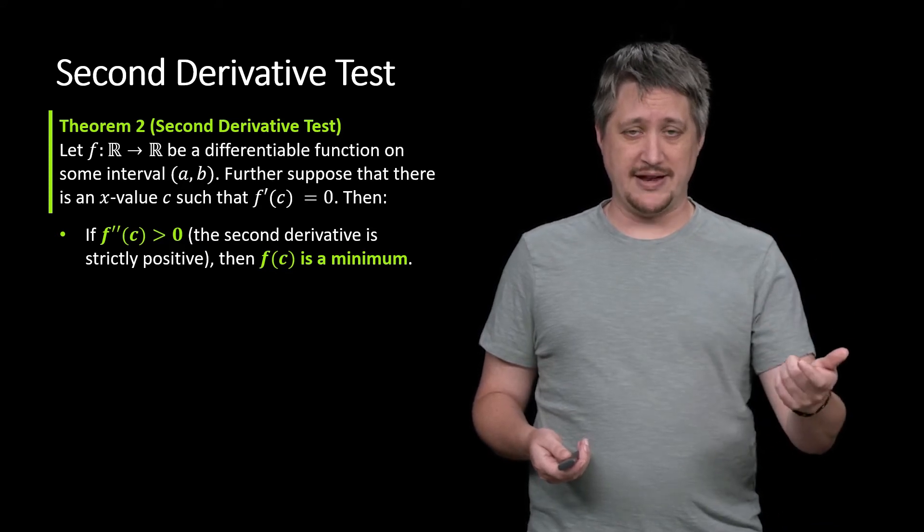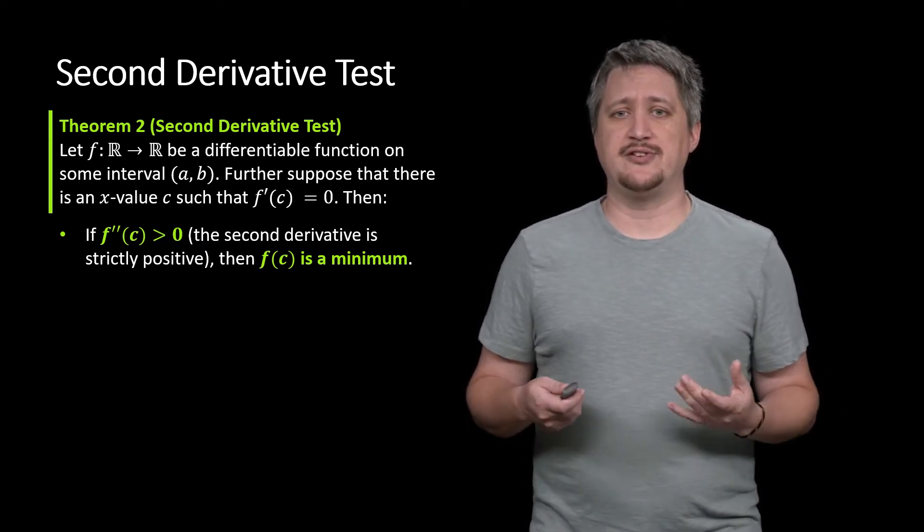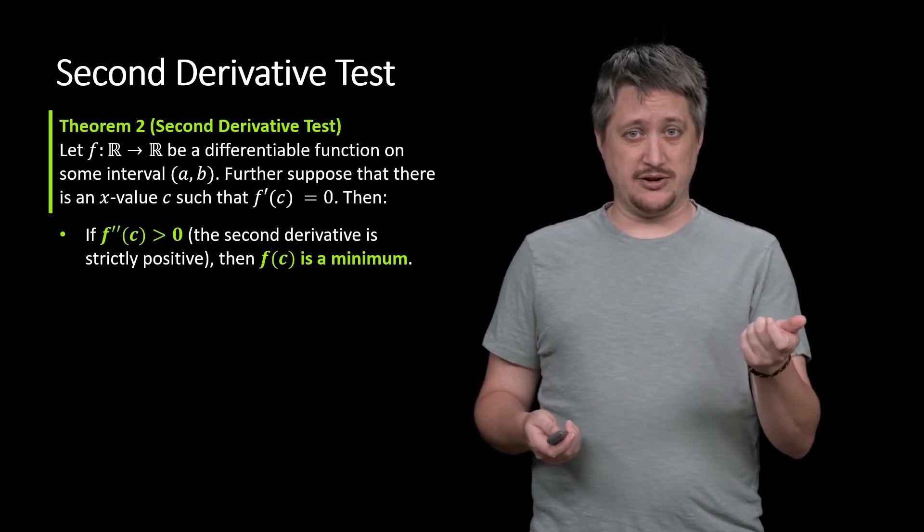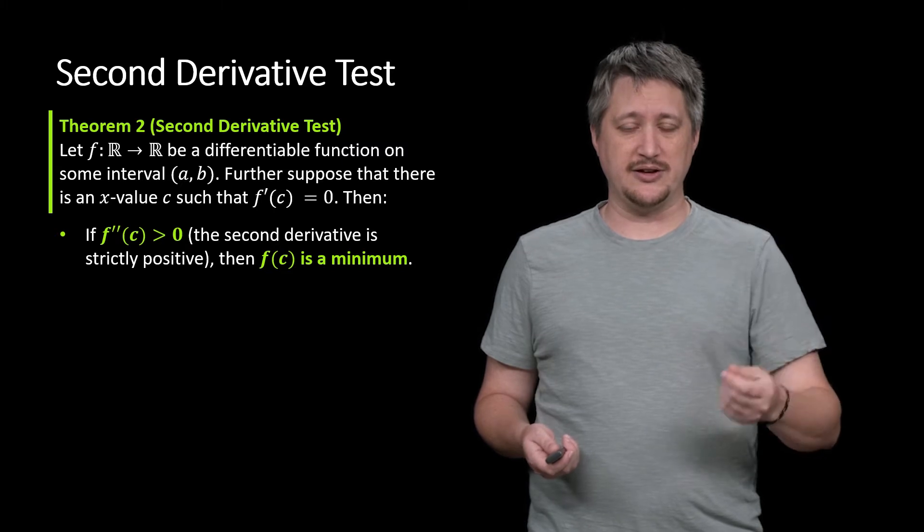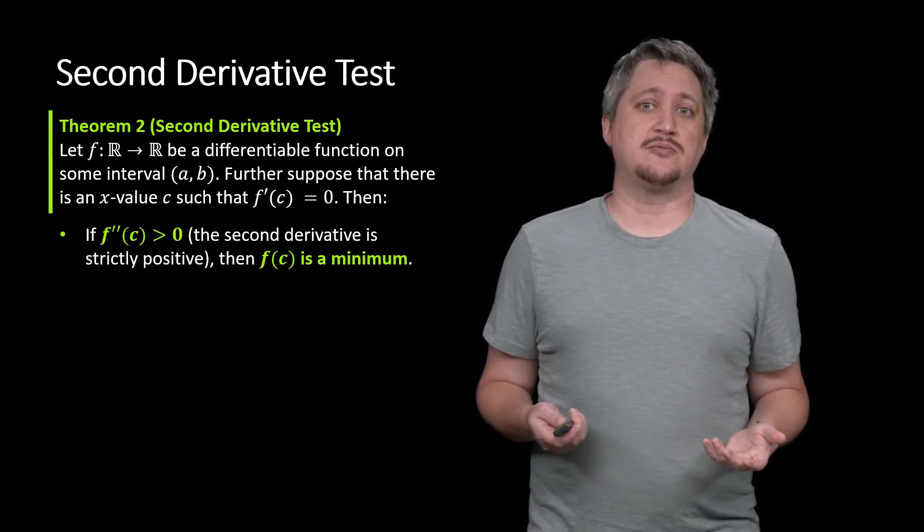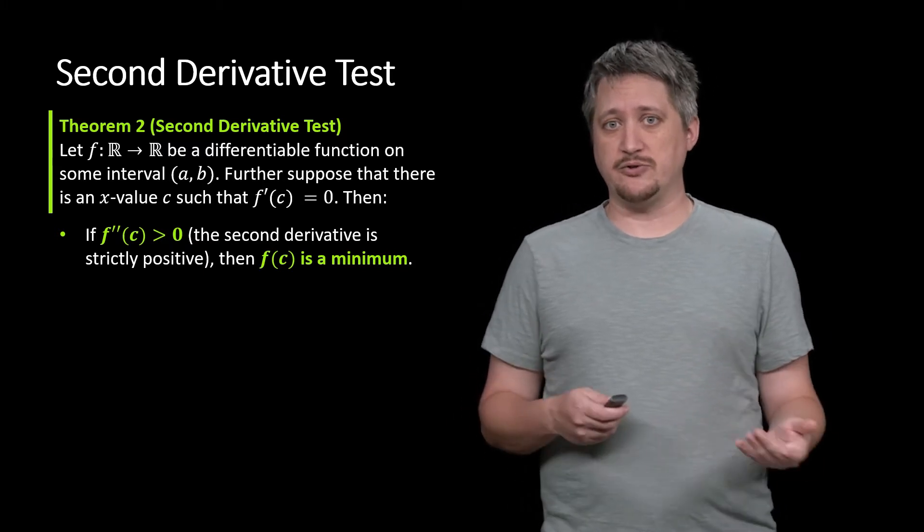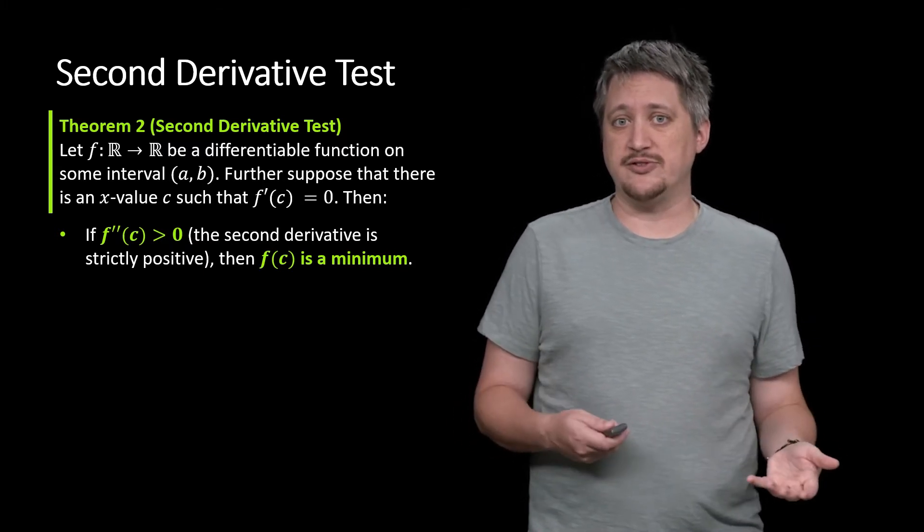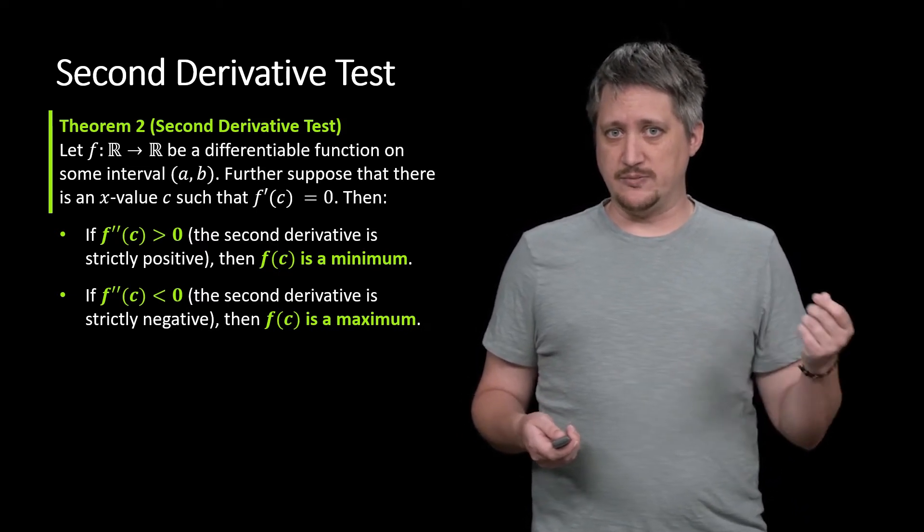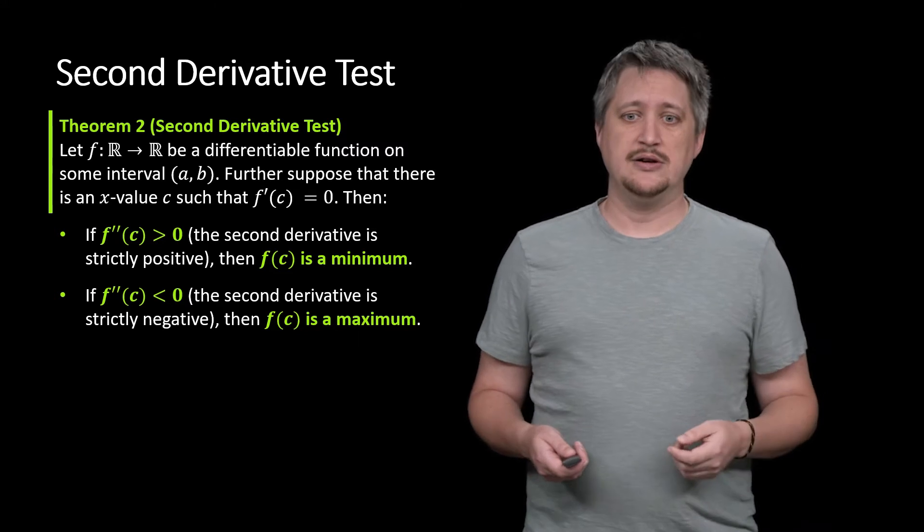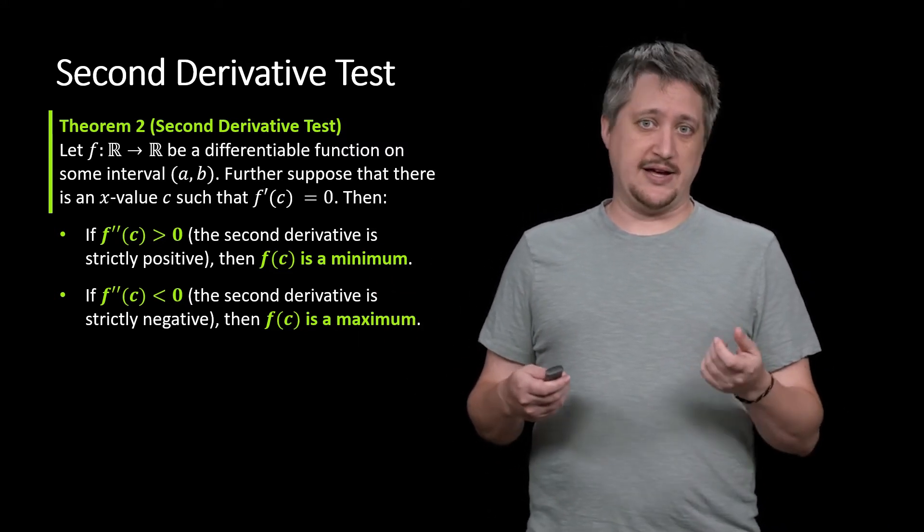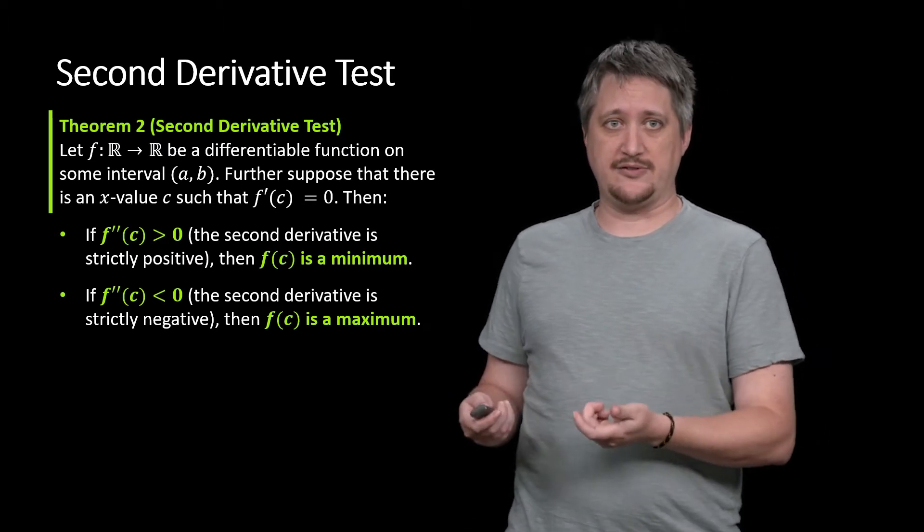Then if you take the second derivative and look at that critical point, you plug in that x value. If you know that the second derivative is some strictly positive number, because we're plugging in the value here—this isn't an f of x, you're actually computing a value—if it's some strictly positive thing, then you know that critical point is a minimum. Likewise, if you know that second derivative, when you plug it in, you get some strictly negative number, then you know that point is not just an extrema but is a maximum.